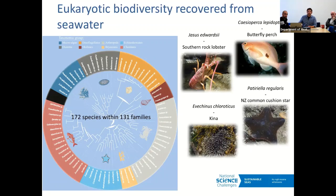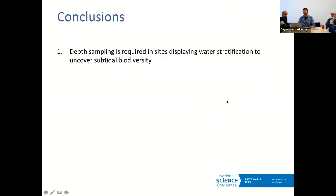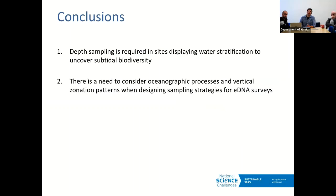Species we detected include southern rock lobster, butterfly perch, kina, and the common cushion star. The conclusions are clear: if you have a stratified water body and want to capture the diversity at that site, you need to sample at different depths because there is a difference in signal. It also suggests you need to consider oceanographic processes — currents and so on — when designing sampling strategies, because the downside of high spatial resolution is that it is affected by those processes.